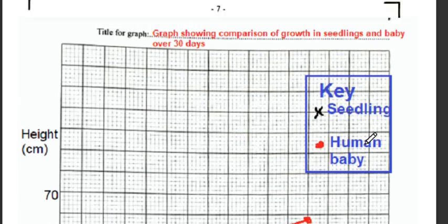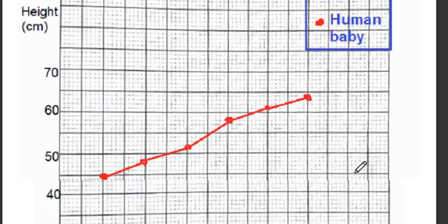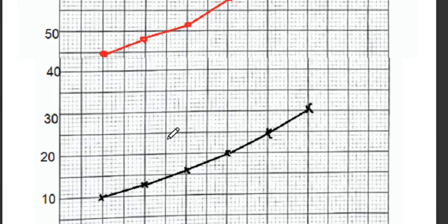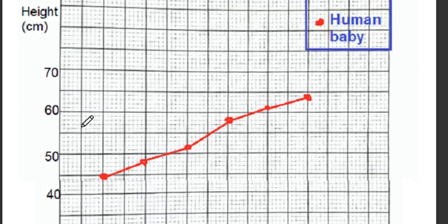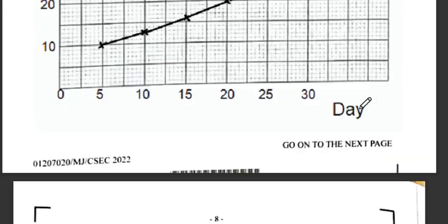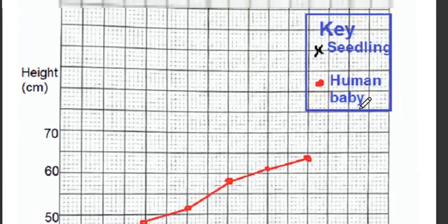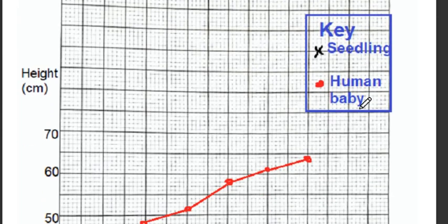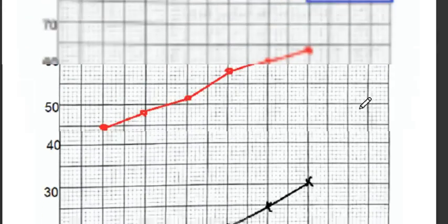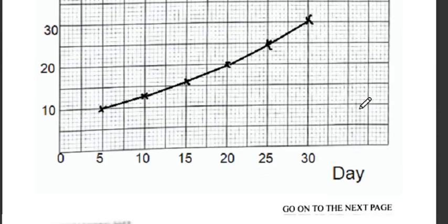On the graph, the seedling is represented by an X and the baby by a red dot — that is our key. The seedling rises from 10 up to 30 cm, while the human baby goes from around 45 up to approximately 64 cm over the 30 days. This graph outlines the difference in growth between the seedling and the baby.